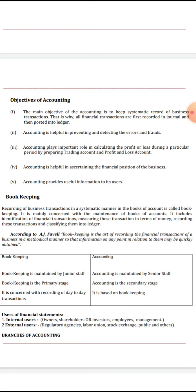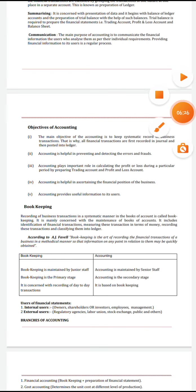Recording business transactions in a systematic manner in the books is called bookkeeping. The differences between bookkeeping and accounting: bookkeeping is maintained by junior staff, while accounting is maintained by senior staff. Bookkeeping is the primary stage and accounting is the secondary stage. Bookkeeping is concerned with recording day-to-day transactions, and accounting is based on the records maintained through bookkeeping.